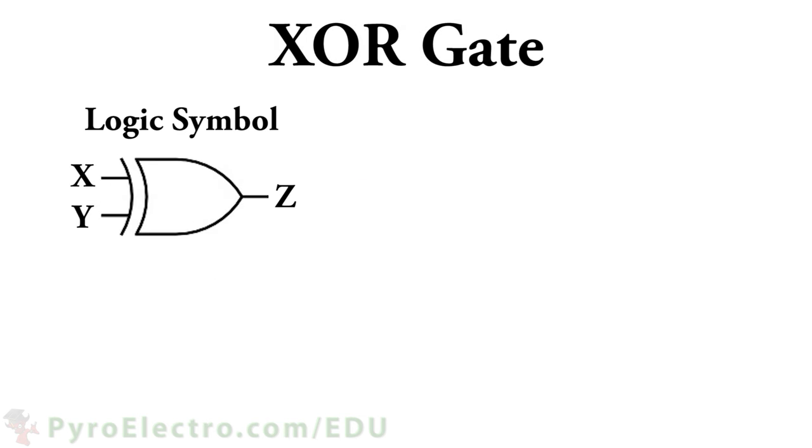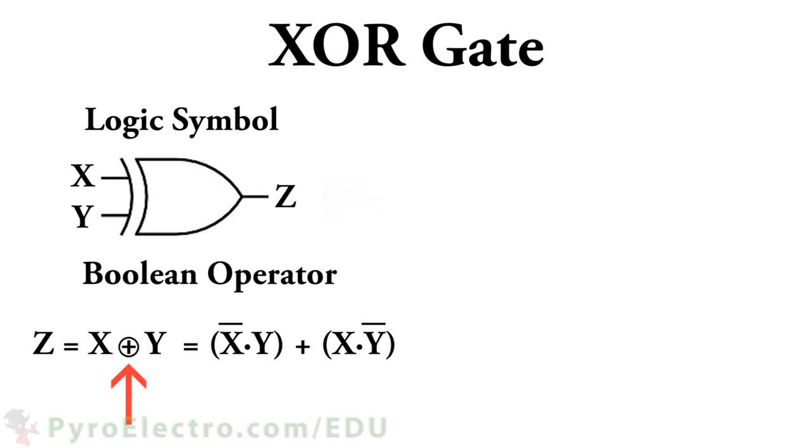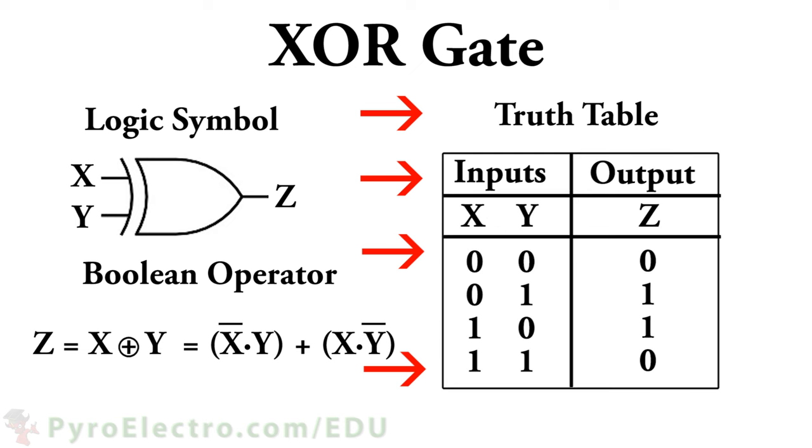The final Boolean expression and logic gate that we'll look at is called the XOR gate, and its Boolean algebra symbol looks like this. The XOR gate, short for exclusive OR, is a special gate that combines both the OR gate and AND gates together.